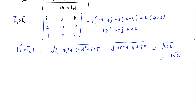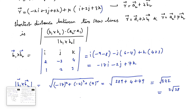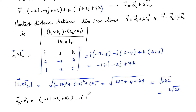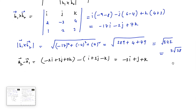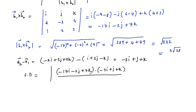The vector a₂ − a₁ is computed as: a₂ − a₁ = (−2i + 3j + 0k) − (i + 2j − k) = −3i + j + k. Therefore, the shortest distance is |(−17i − 2j + 7k) · (−3i + j + k)| / (3√38).